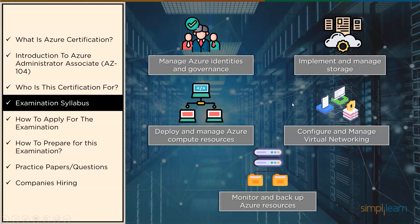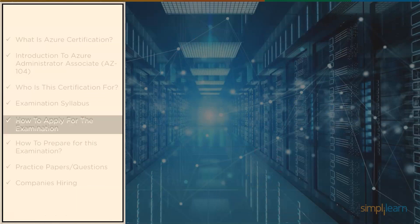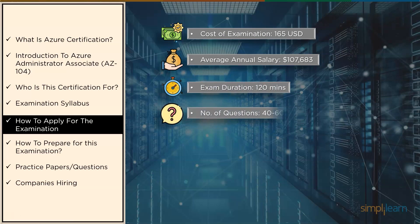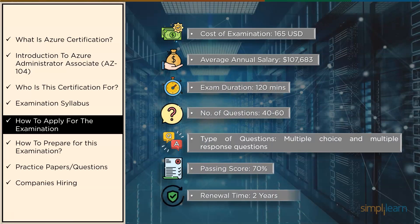Now let's have a look at how to apply for this examination. The cost of the examination is 165 USD and its annual salary is $107,683. The duration of this examination is 120 minutes and the number of questions varies between 40 to 60. The types of questions can be either multiple choice or multiple response, and the passing score to ace this examination is 70% with a renewal time of 2 years.